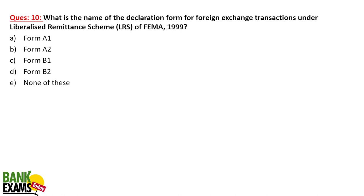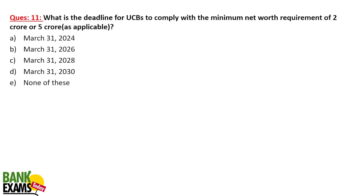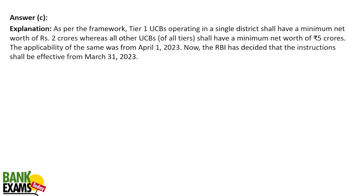What is the name of the declaration form for foreign exchange transactions under the Liberalized Remittance Scheme? Also, what is the deadline for Urban Cooperative Banks to comply with the minimum net worth requirement? If a UCB operates in only one district, the minimum net worth requirement is 2 crore; if in multiple districts, it is 5 crores. They need to achieve this by 31st March 2028.